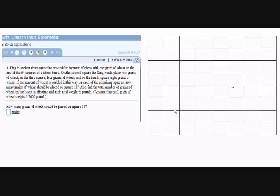It says on the second square the king would place two grains of wheat, on the third square four grains of wheat, and on the fourth square eight grains of wheat, and so on. The first square we have one grain of wheat, the second one two grains of wheat, the third square four grains of wheat.